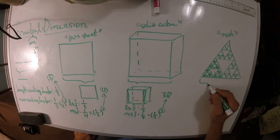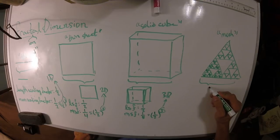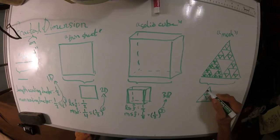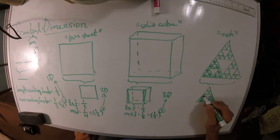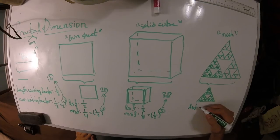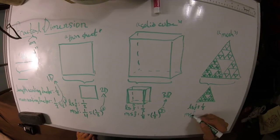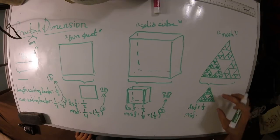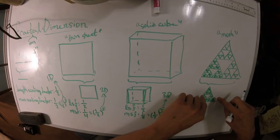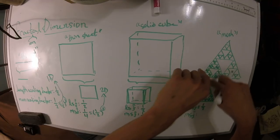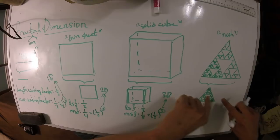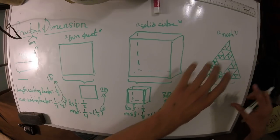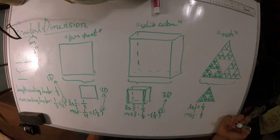Let's try it with the Sierpinski triangle. Scale it down to one half the length, and the length scaling factor is one half. But what about its mass scaling factor? We need to consider how many of the scaled-down versions would make one of the original. As you can see, the scaled version is exactly like one third of the bigger one - so we would need three of them: one here, one here, and one here to make the bigger one. So its mass scaling factor is one third.